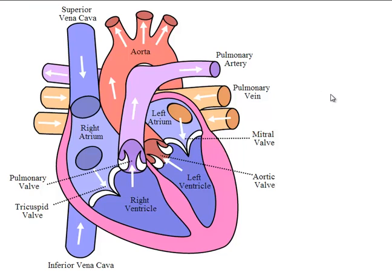In the lungs, this deoxygenated blood releases carbon dioxide into the alveoli and simultaneously absorbs oxygen to get oxygenated. When again the heart expands, the oxygenated blood from the lungs comes to the left atrium of the heart through the pulmonary vein, and this oxygenated blood is passed to the left ventricle through the bicuspid valve, or mitral valve as it is labeled here.